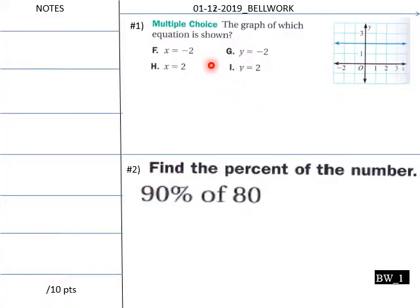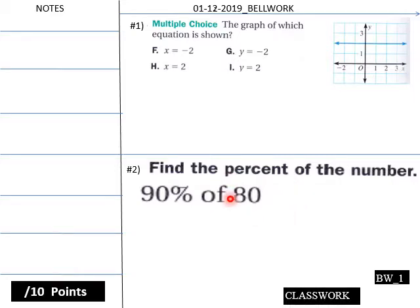And we have a 34-point class worksheet and a 10-point note-taking guide here. Today's Bellwork Teachers. The graph of which equation is shown here. Here's your graph. And then find students. Find a percent of the number. 90% of 80. Give your students about four minutes.